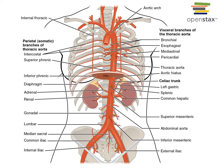Another branch coming off the subclavian artery is the internal thoracic artery, also known as the mammary artery, which supplies the anterior chest wall and mammary region. It forms several anastomoses with other arteries traveling through the chest wall, including the intercostal arteries, which branch off and travel on the inferior surface of the ribs in the costal grooves, forming anastomoses with the internal thoracic artery.